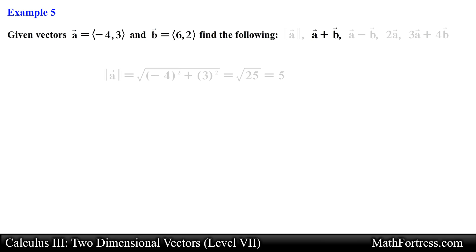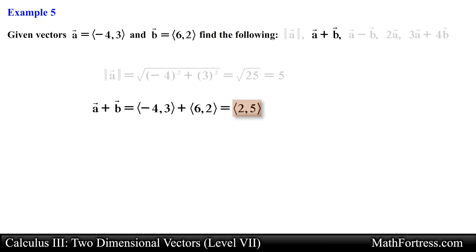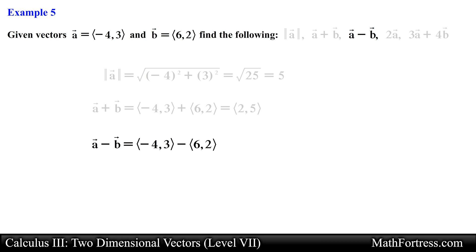Now let's find the sum of vector A and vector B. To find the sum we simply add them component wise: we add the x components together which results in 2, and we add the y components together which results in 5. The sum of vector A and vector B yields a vector with components equal to (2, 5). Next let's find the difference of vector A and vector B. We find the difference by subtracting the components of each vector: negative 4 minus 6 for the x component, and 3 minus 2 for the y component, resulting in a vector with components equal to (negative 10, 1). You can also think of vector subtraction as a special case of vector addition by distributing the negative sign to each of the vector's components before adding.